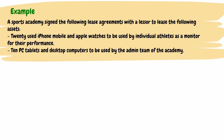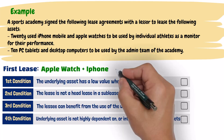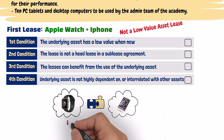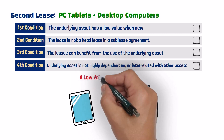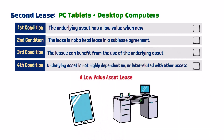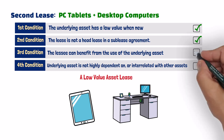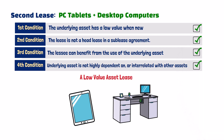A sports academy signed the following lease agreements to lease these assets: 20 used iPhone mobiles and Apple watches to be used by individual athletes as performance monitors; and 10 PC tablets and desktop computers to be used by the admin team. The first lease agreement is not a lease of low value assets because both the Apple watches and the mobile phones are highly interrelated, and therefore do not qualify. The second lease agreement is a lease of low value assets because the conditions are satisfied — the PC tablets and desktop computers have low values when new, will not be subleased, the lessee can benefit from their use, and they are not highly dependent on or highly interrelated with each other.